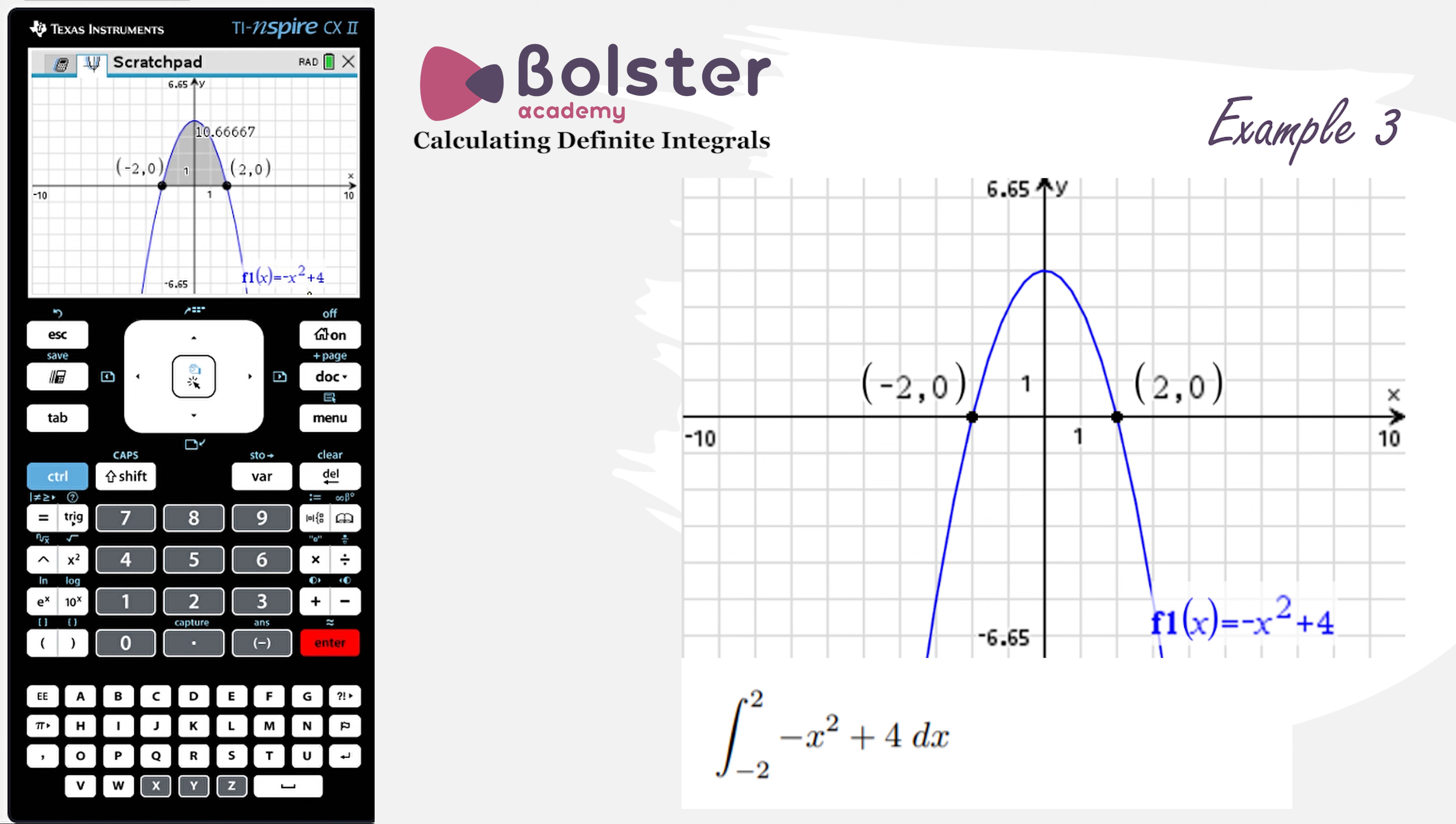There we go. So we have the area that we're looking for, and we have its value, 10.666 recurring, so to three significant figures, that would be 10.7.